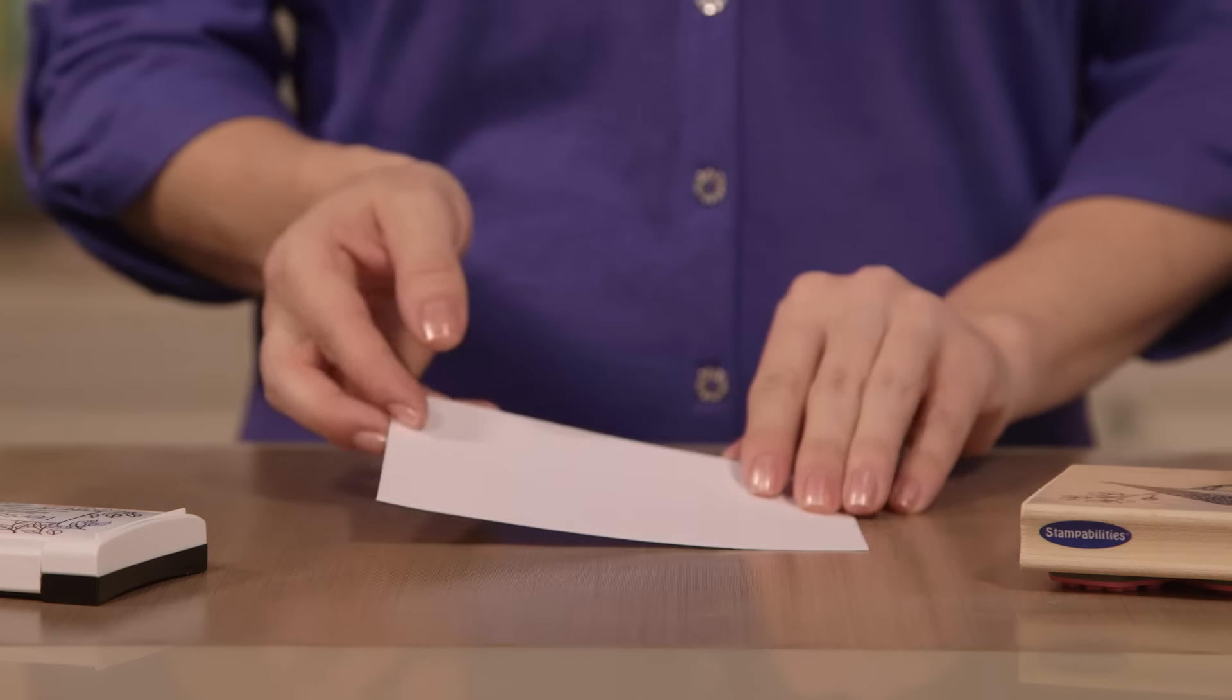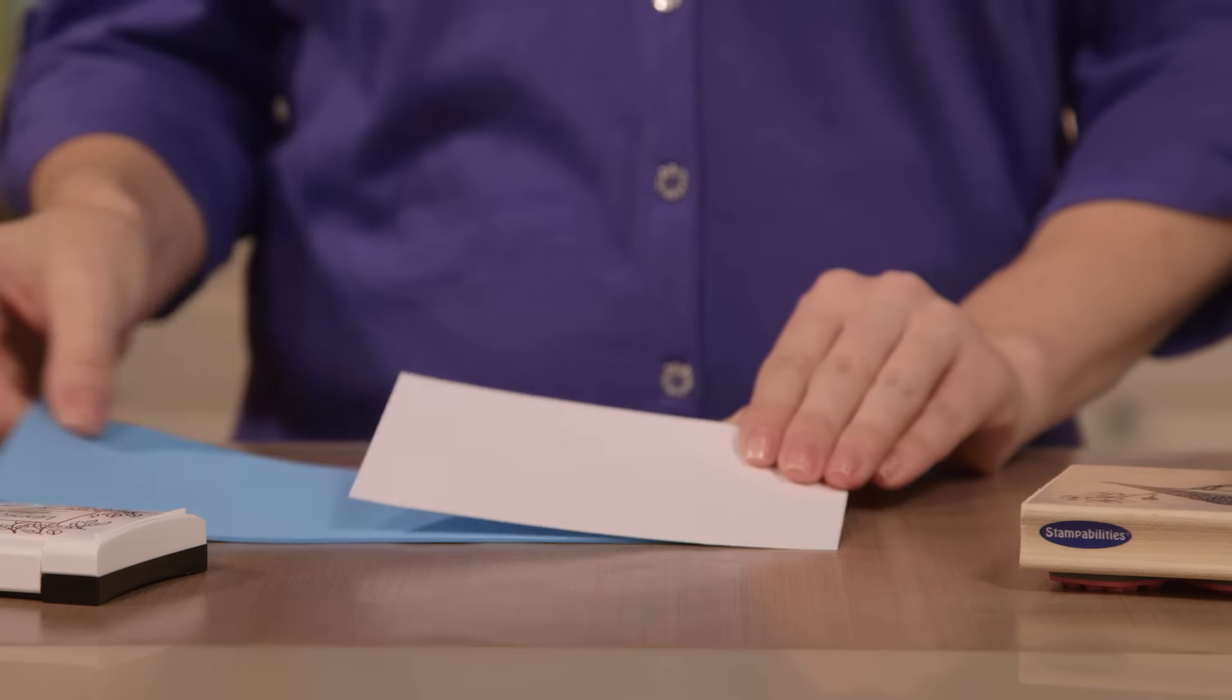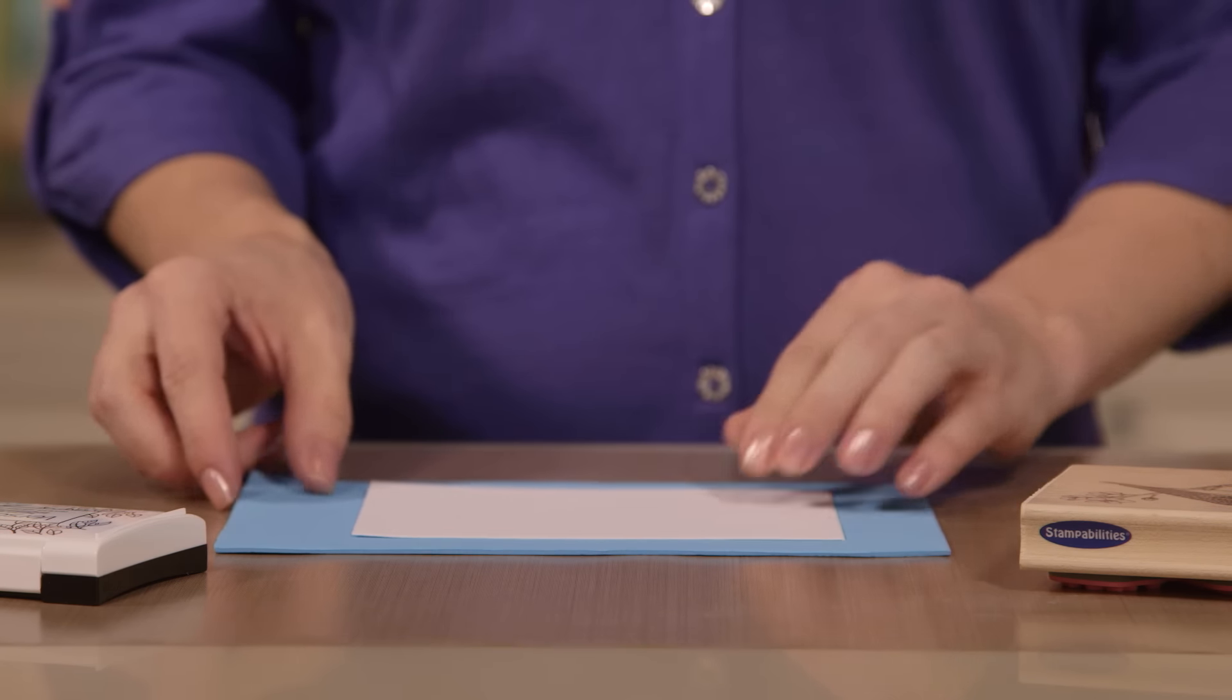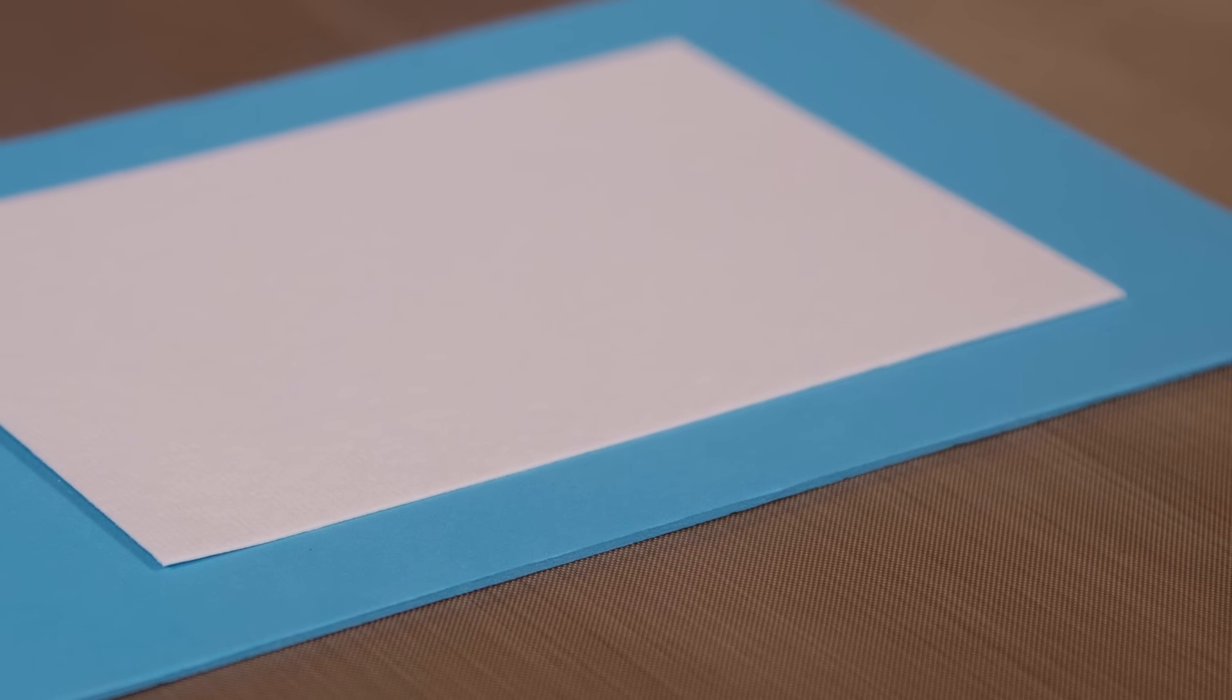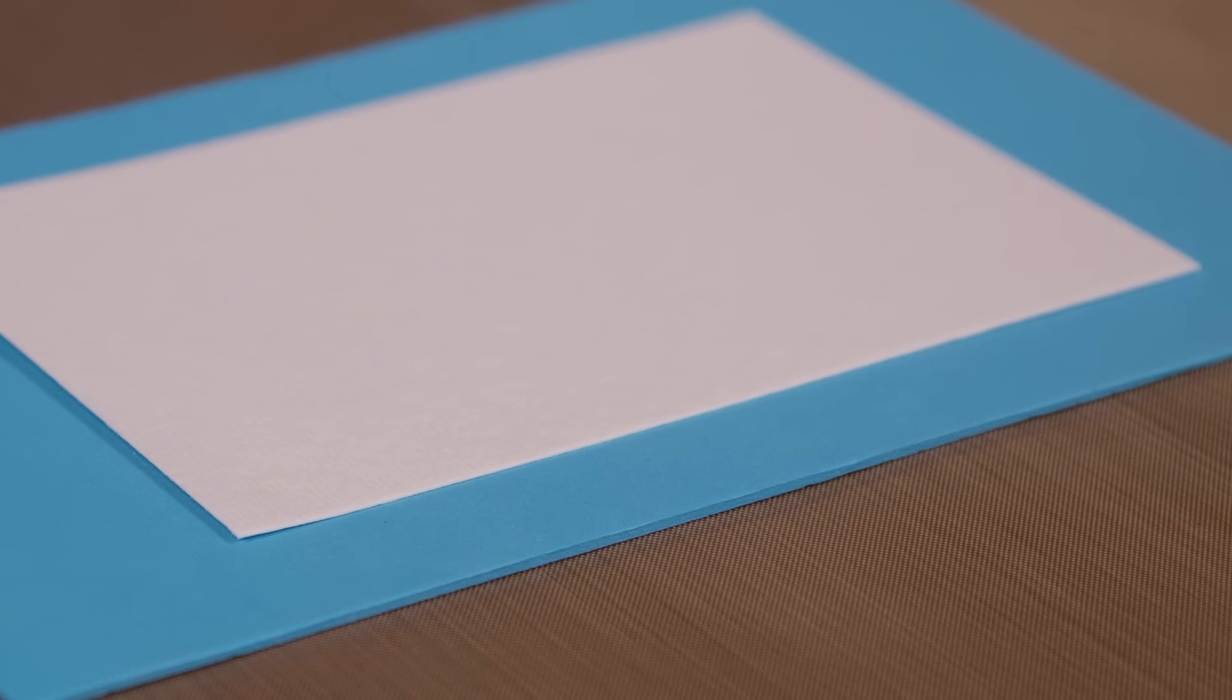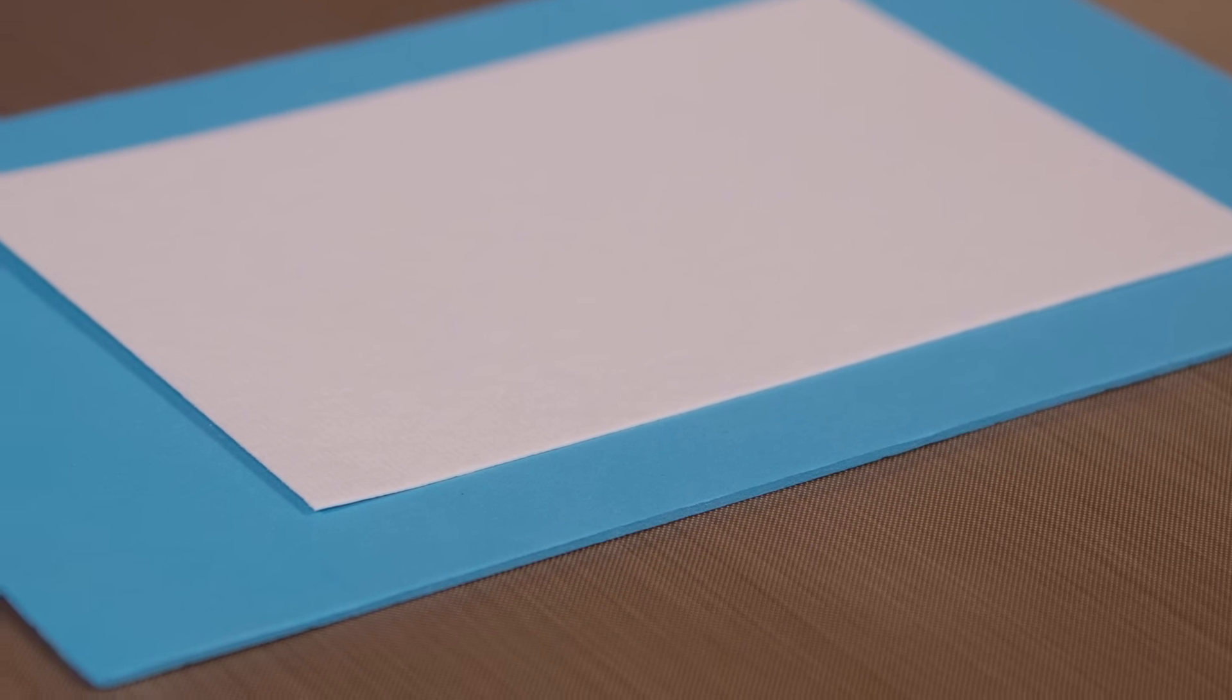The first thing I want to show you is actually not a stamp, it's craft foam. I'm slipping this underneath the paper I'll be stamping on to ensure that my work surface is smooth, flat, and even. That way, I know all my stamp details will show up crisp and clean every time.